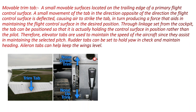Suppose when an aircraft deflects from the level flight attitude and its nose moves down, the pilot sets the control wheel in the nose up trim position so that the trim tab moves down. The air flowing strikes the tab, and the aerodynamic forces move the elevator up. By moving the elevator up, the nose of the aircraft moves up so that the aircraft maintains its level flight attitude.